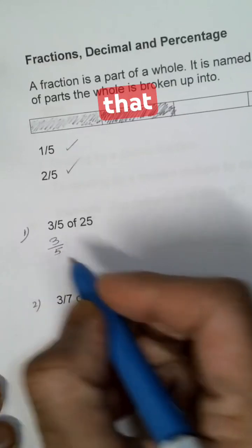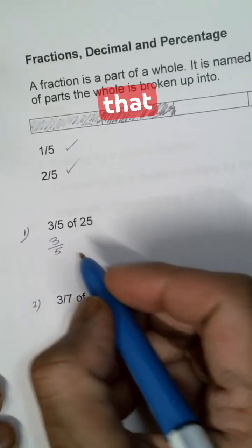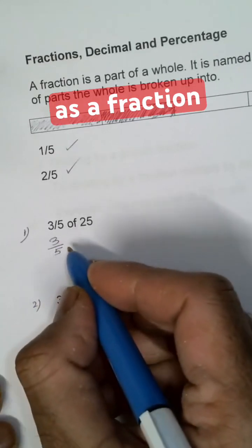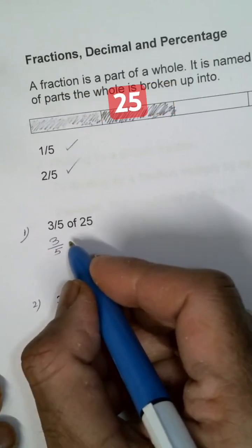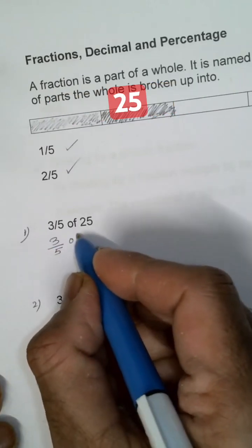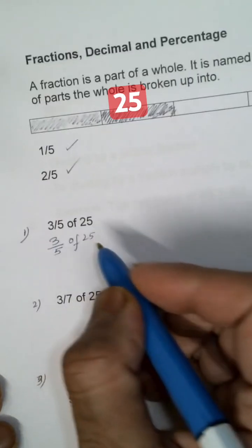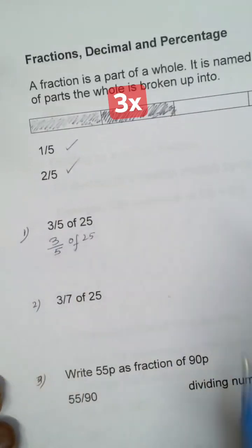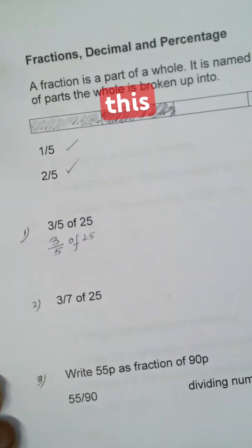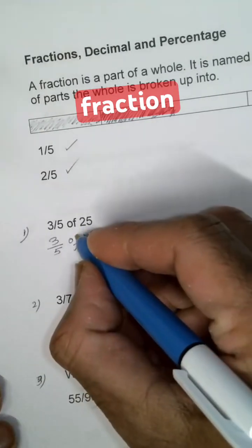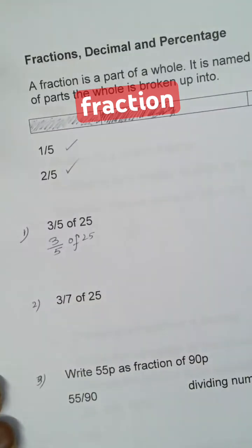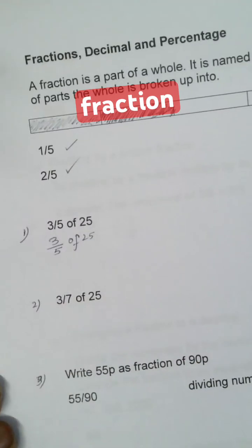That as a fraction of 25 — so 3 by 5 of 25. This kind of fraction, we call a proper fraction.